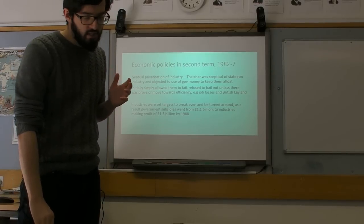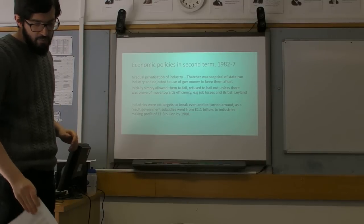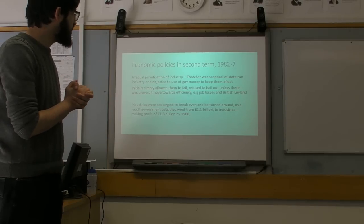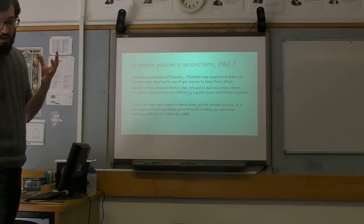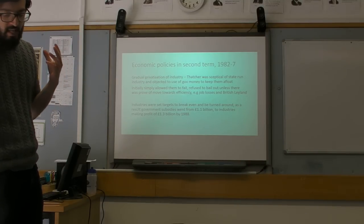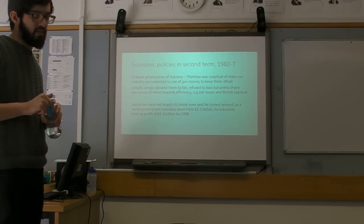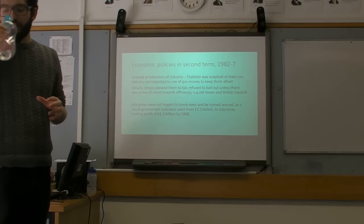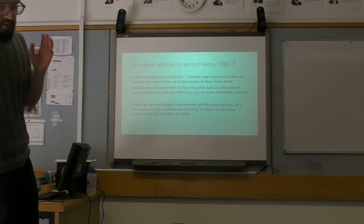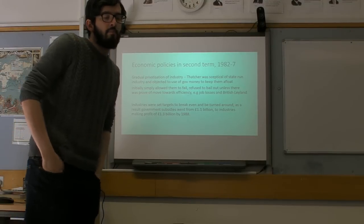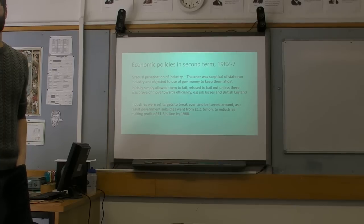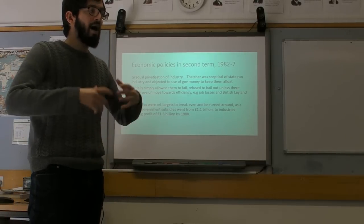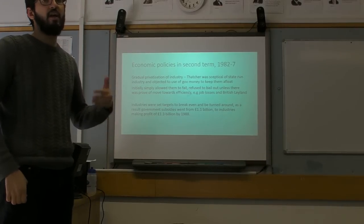So that's her first term in office. The really big stuff starts to happen in her second term. Her most significant policy, arguably, is that her second term, she begins to gradually privatise industry. Thatcher was sceptical of state run industry. And actually the truth is, even worse than that, at the time, most nationalised industries were actually making losses year on year. If these industries are making losses, how are they not going bankrupt? The government steps in and gives them subsidies.